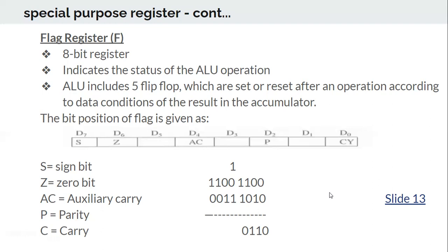When an addition operation is performed on two 8-bit values and there is a carry out from the 8th bit, the carry bit is set to 1. Otherwise it remains 0.